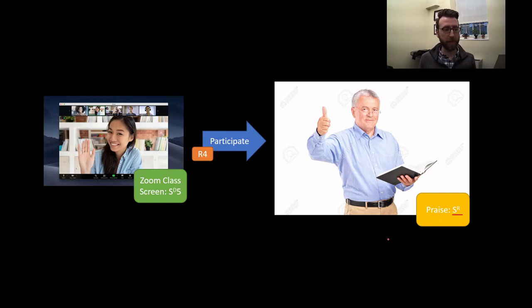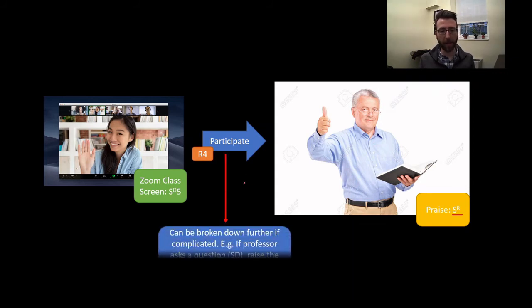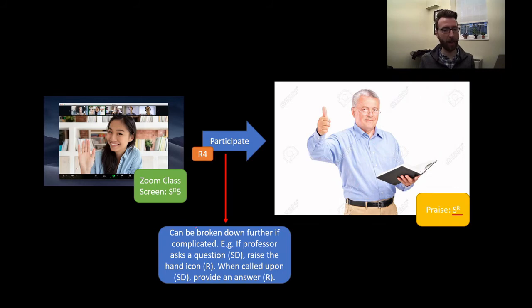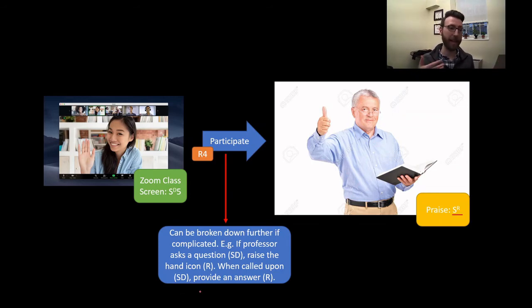I've simplified this behavioral chain a little bit, but if we wanted to, we could break it down further. We could break down the participation action into a more complicated set of stimuli and responses. We might be in our Zoom call and wait for the discriminative stimulus of the professor asking a question, upon which point you raise the hand icon as your response. Then you wait for another discriminative stimulus — being recognized by the instructor — at which point you perform the next behavior of providing an answer. While you might understand what 'participate' means, somebody who has never done this might not, and they might require the task to be broken down into smaller chunks.